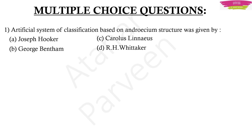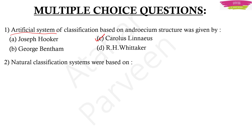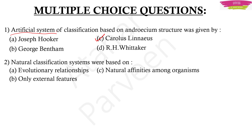Were you able to answer it? The answer is Carolus Linnaeus — he was the scientist who gave the artificial system of classification, which was the very first system we discussed. The next question: natural classification systems were based on — evolutionary relationships, only external features, natural affinities among organisms, or superficial features? The answer is natural affinities among organisms.